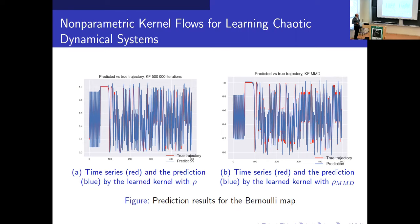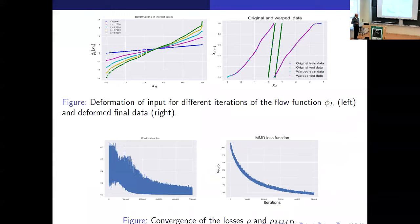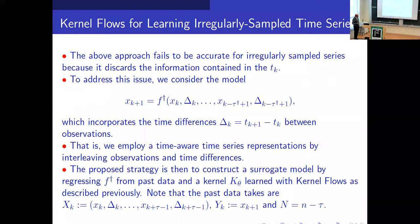For Bernoulli: red is true, blue is with the original kernel flows, and this one is with MMD. Here is the warping — the original is linear (blue), and after many iterations (500,000) it deforms. One issue with non-parametric kernel flows is that it takes a lot of time to train. This shows the deformation and how the dynamics change after warping. The MMD loss seems to have better convergence properties than the original loss.